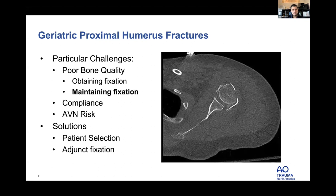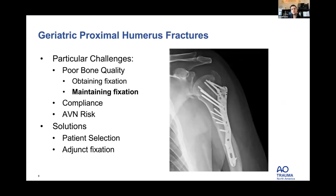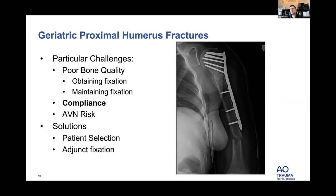Regarding compliance: one of my patients underwent complicated surgery for non-union but then was unable to avoid getting up and moving with her walker, had balance problems, fell, and broke right below the plate. AVN risk: here's a 70-year-old with a fracture-dislocation and four parts; the humeral shaft was reduced back into the joint leaving the humeral head in the axilla. It was fixed with the head put back in and obviously went on to AVN, ultimately requiring a reverse shoulder.